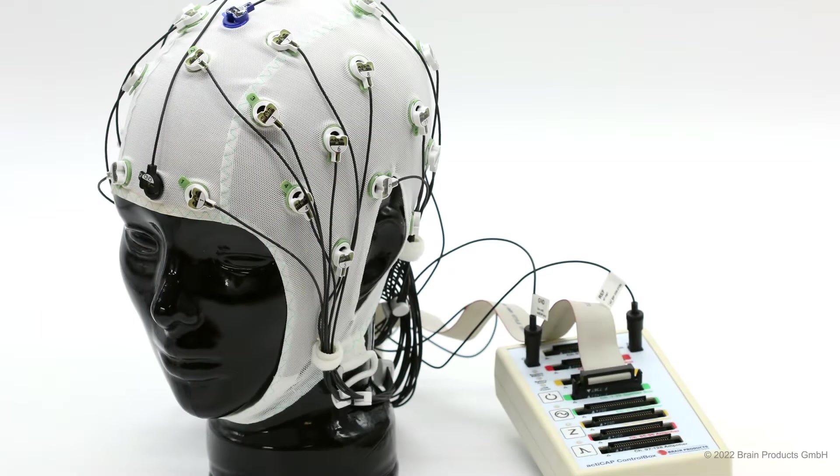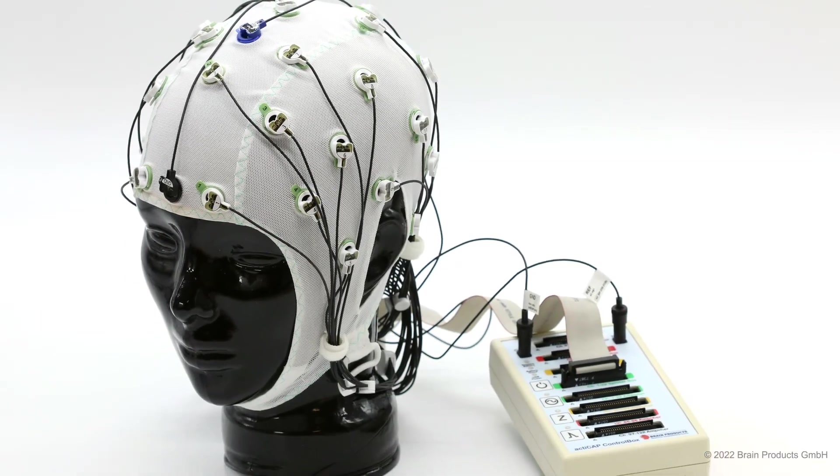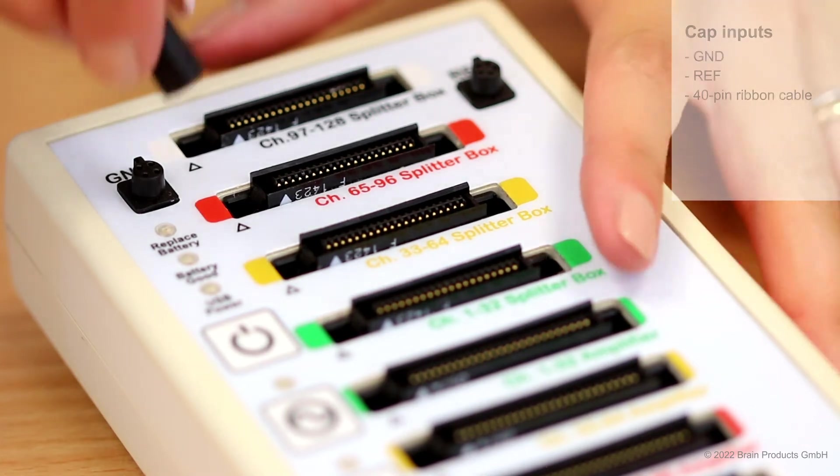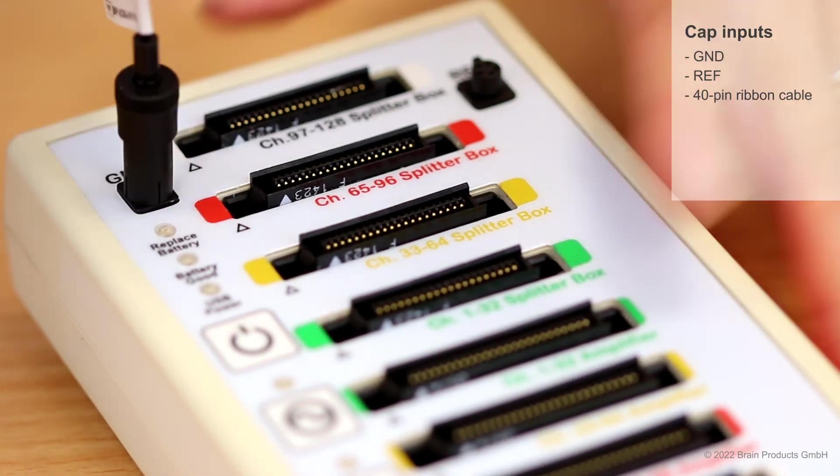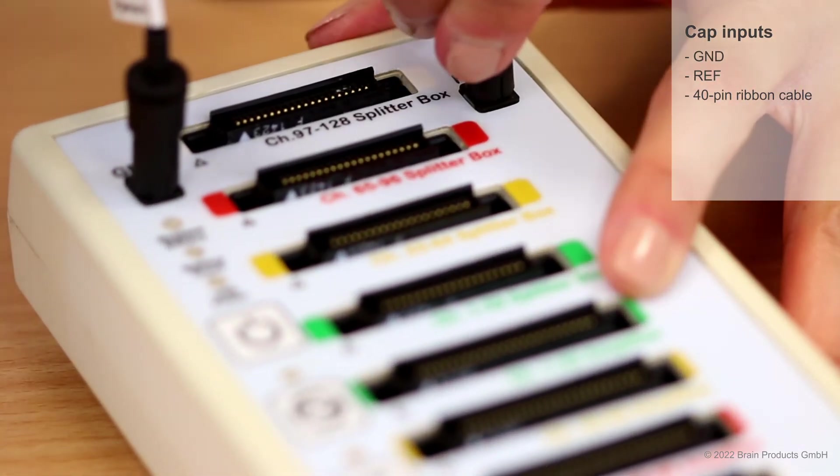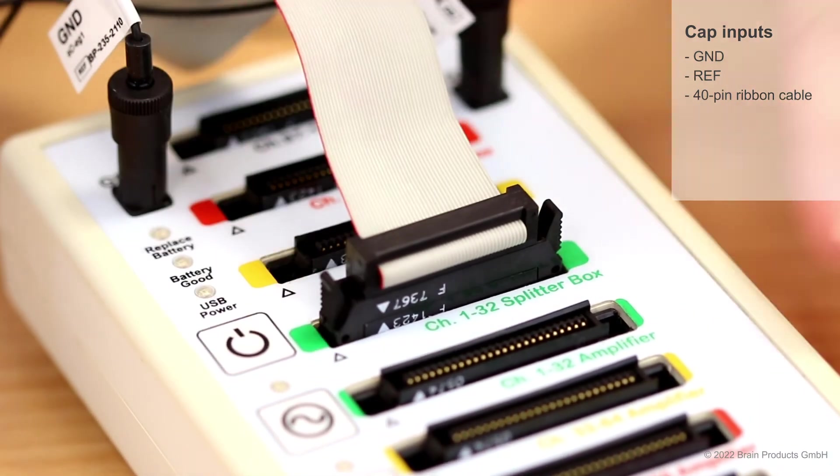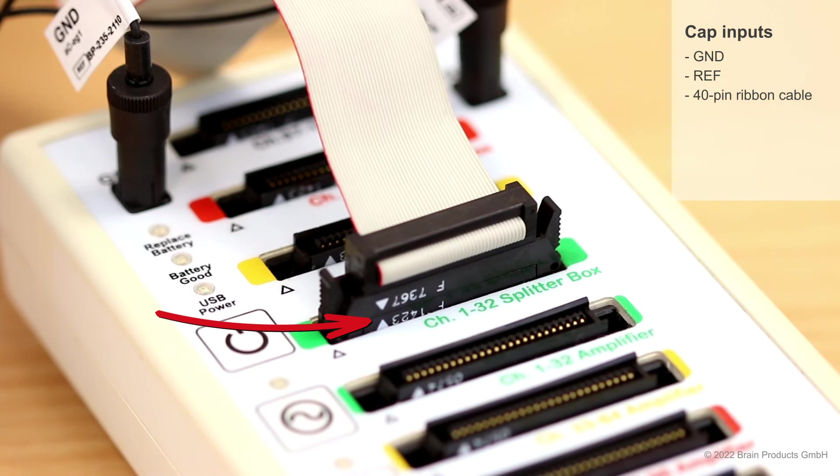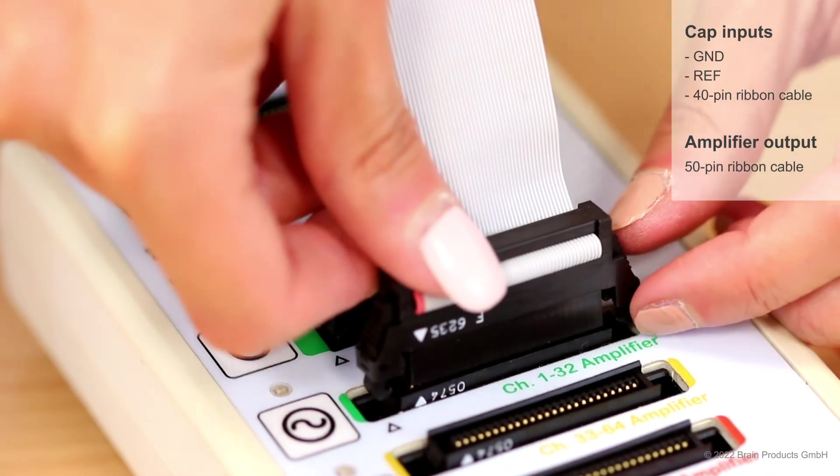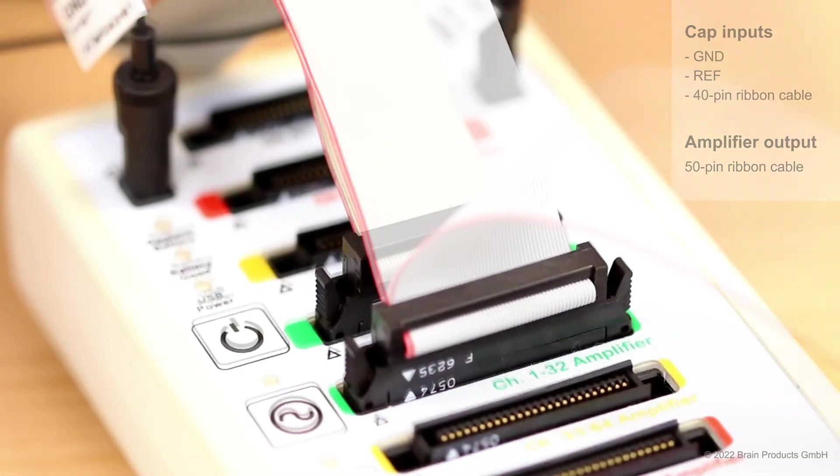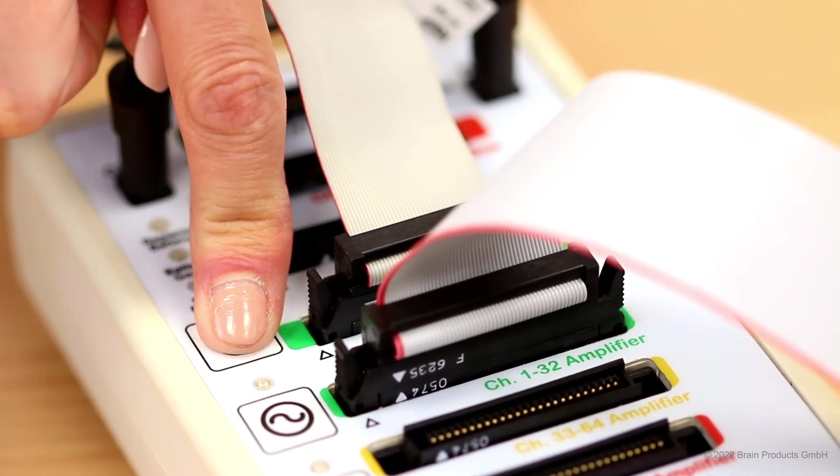If you are using a cap with ActiCap Slim electrodes, you will also need the ActiCap control box, often simply called the control box. First, plug the ground and the reference electrodes into the control box. Next, connect the signal electrodes bundle to the 40-pin connector of channels 1-32 of the control box. Then, connect the control box to the BrainAmp amplifier unit via the 50-pin BAK cable and switch on the control box.